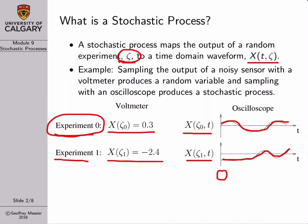We repeat the experiment and get a second time-domain waveform that's different from the first because of the random noise in the voltage. Time 0 is defined as the start of the trial of our experiment. Even though experiments happen sequentially in a causal universe, we just line things up so that all realizations start at the same point in time. This will be very important when we talk about the ensemble of our random waveform.